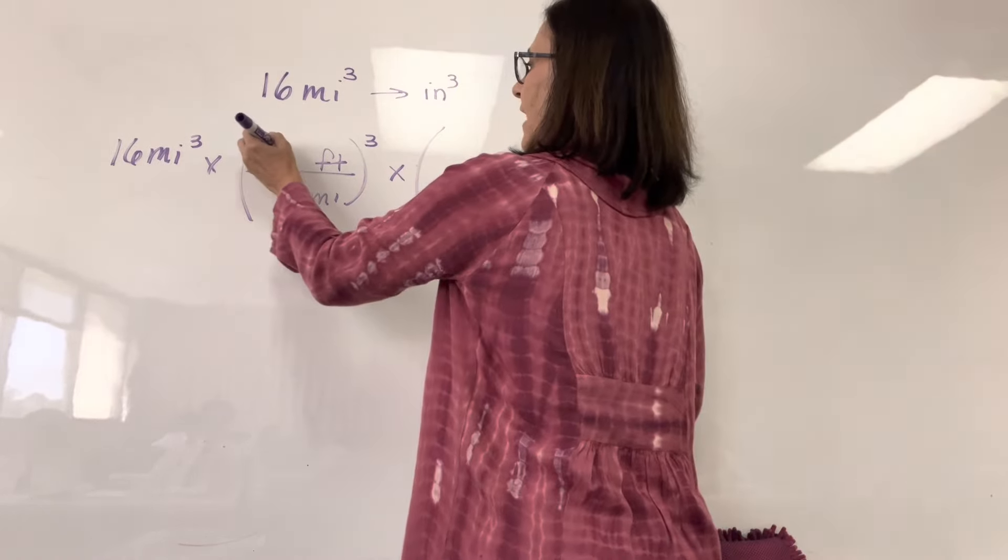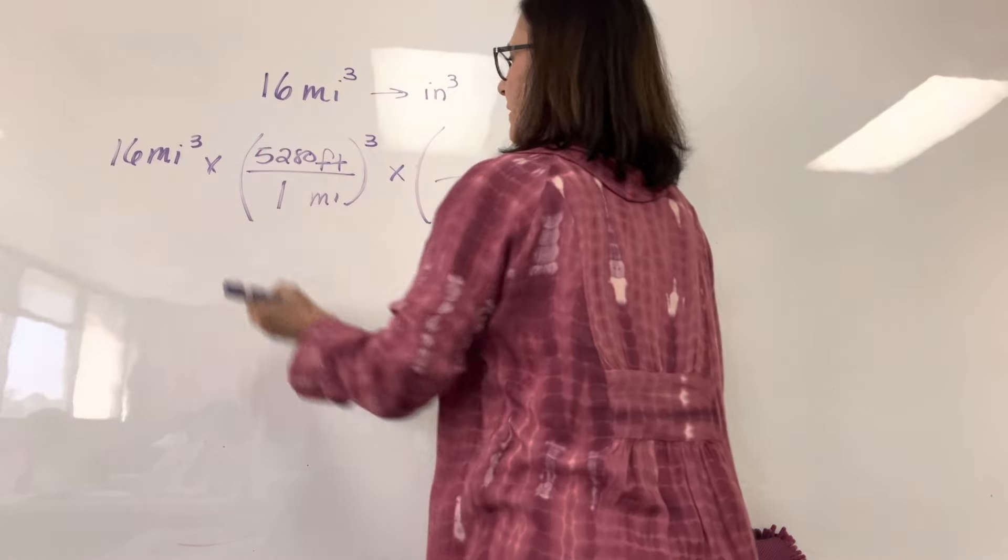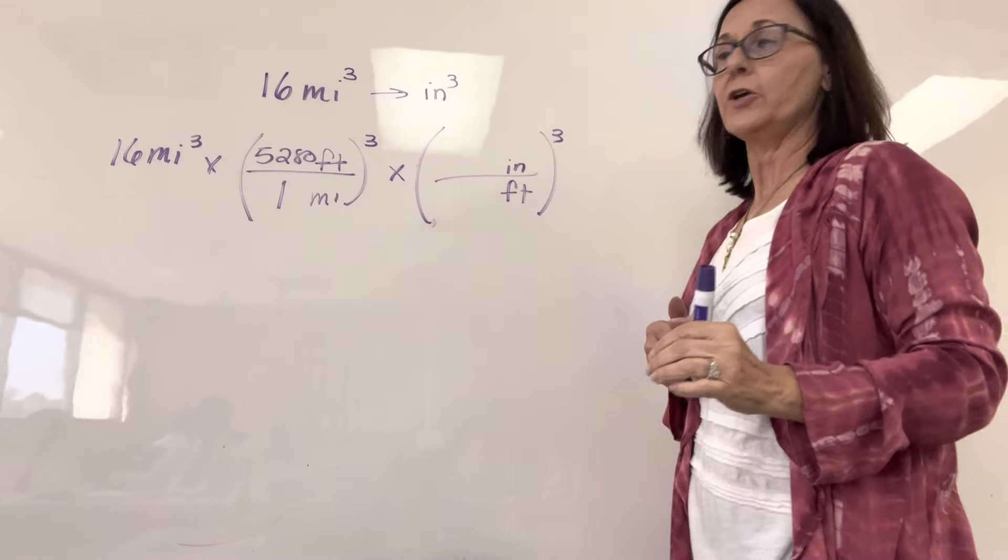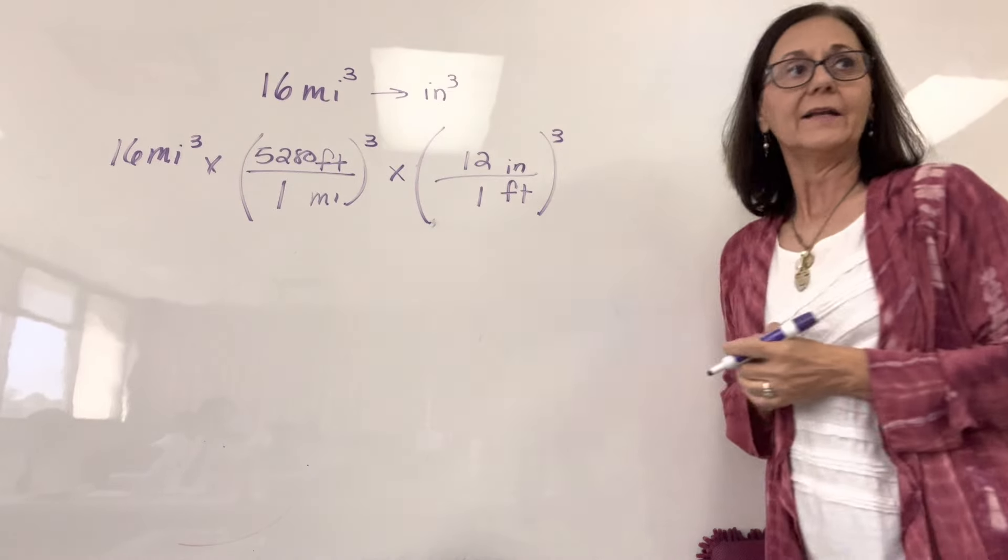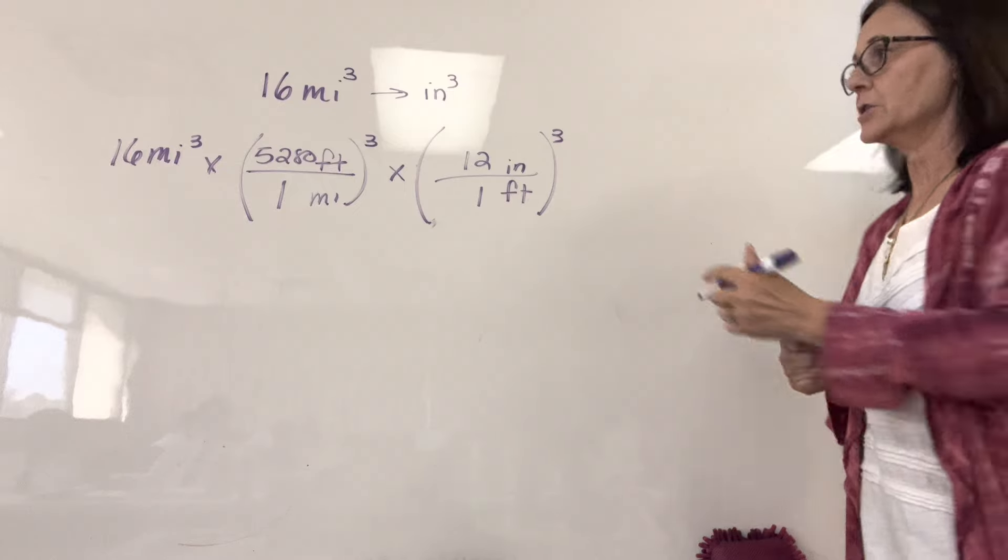All right. So 5,280 feet in a mile and that multiplier is cubed. 12 feet in an inch and that unit multiplier is cubed.